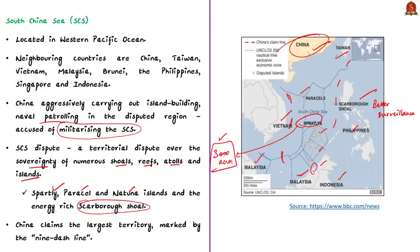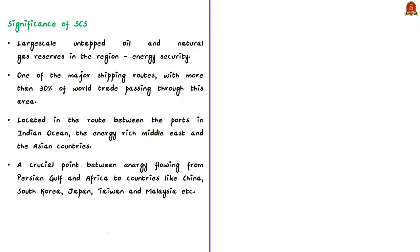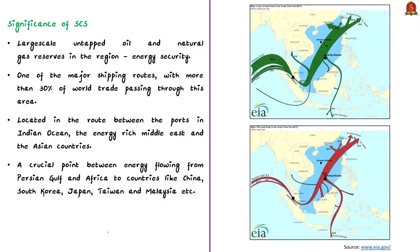Among all stakeholders, China claims the largest territory, marked by nine red dotted lines called the nine-dash line, which covers almost the entire South China Sea. This shows how China violates UNCLOS — the United Nations Convention on the Law of the Sea — and follows an aggressive expansionist policy. China claims indisputable sovereignty over areas inside the nine-dash line. The region is heavily disputed because of reports of large-scale untapped oil and natural gas reserves, making energy security crucial for development.